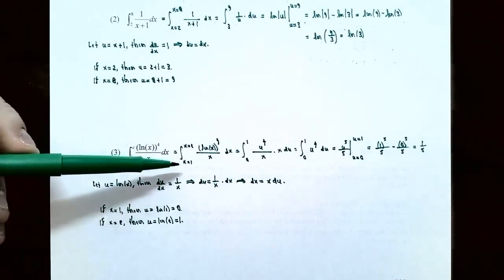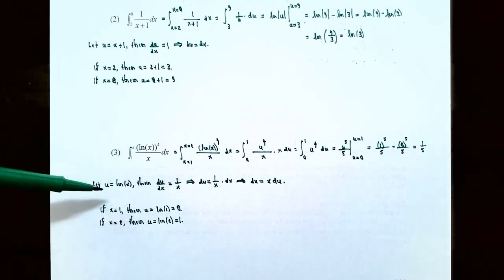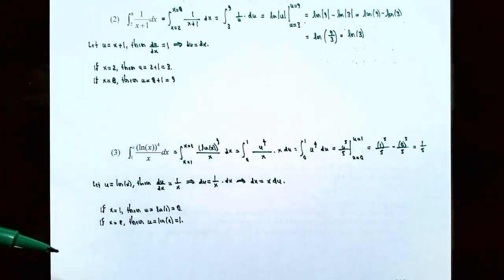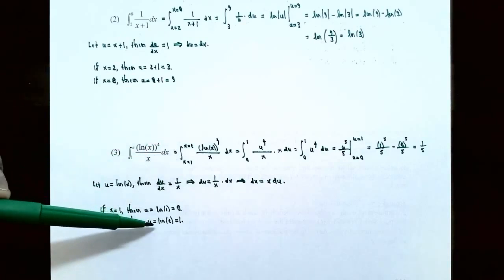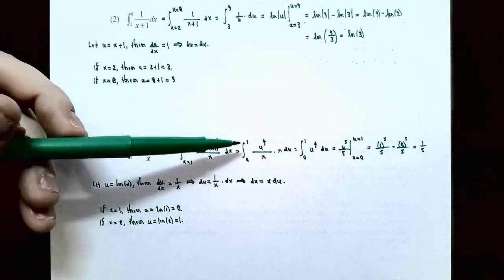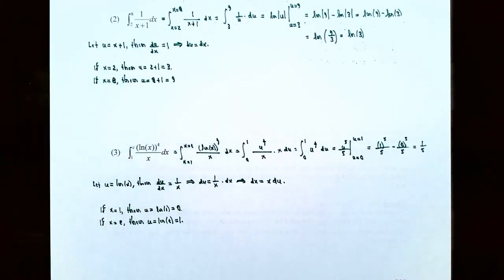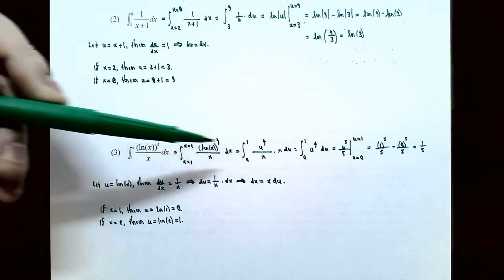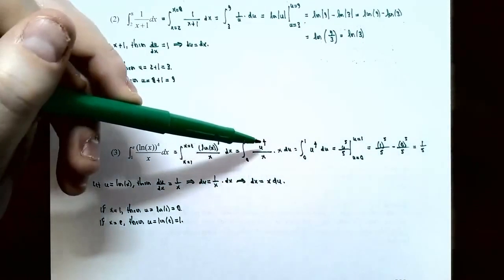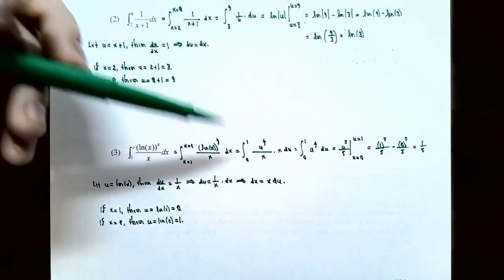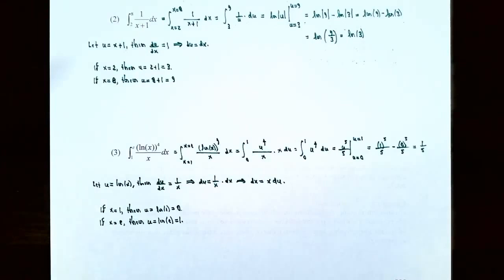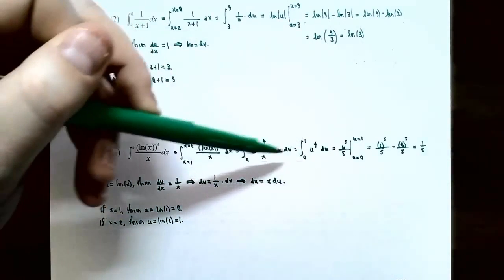For the lower limit x equals 1: u equals natural log of 1 equals 0, so the lower limit becomes u equals 0. For the upper limit x equals e: u equals natural log of e equals 1, so the upper limit becomes u equals 1. Making all substitutions: limits are u equals 0 to u equals 1, natural log of x becomes u to the fourth power, all divided by x, and dx is replaced with x times du. The x's cancel out, giving the integral from 0 to 1 of u to the fourth du. The antiderivative is u to the fifth divided by 5. Evaluating at u equals 1 and u equals 0: 1 to the fifth over 5 minus 0 to the fifth over 5 equals 1/5 minus 0 equals 1/5.